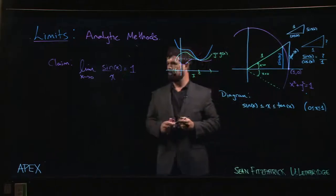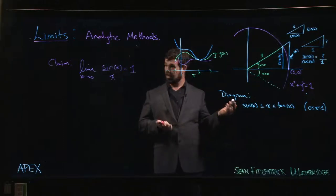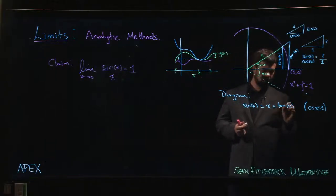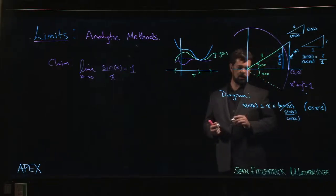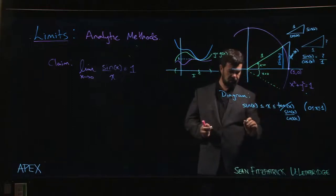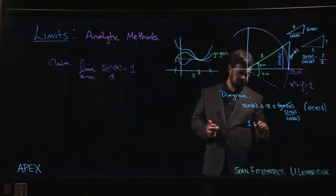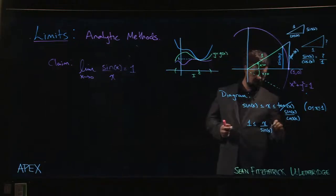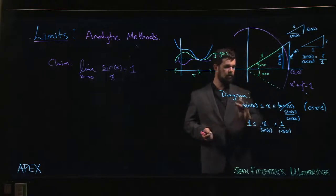We want to use this to say something about sin(x) over x. We'd like to have that in the middle. What we can do is note that tan(x) is sin(x) over cos(x). I can see how to get x over sin(x) by dividing all the way through by sine. We're in the first quadrant, so sine is positive; we can do that. So sin(x) over sin(x) is just 1, less than or equal to x over sin(x), and then we have 1 over cos(x).